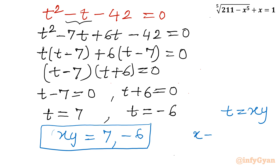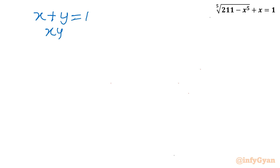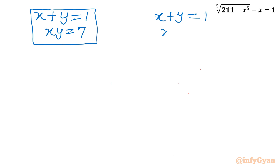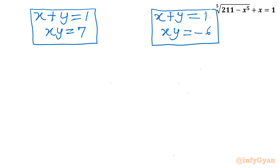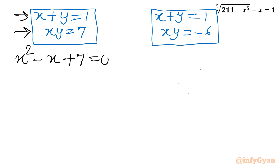We know x plus y equals 1. Now let us solve for x by framing two systems of equations. First system: x plus y equals 1 and xy equals 7. Second system: x plus y equals 1 and xy equals minus 6. Using sum and product of roots, I frame the first quadratic: x^2 minus x plus 7 equals 0. For the second: x^2 minus x minus 6 equals 0.